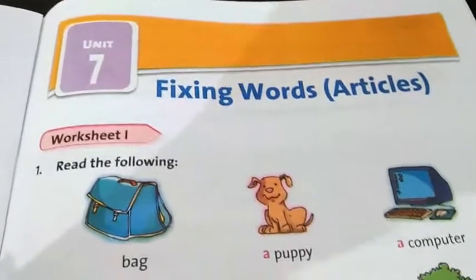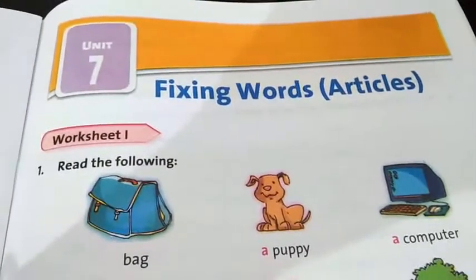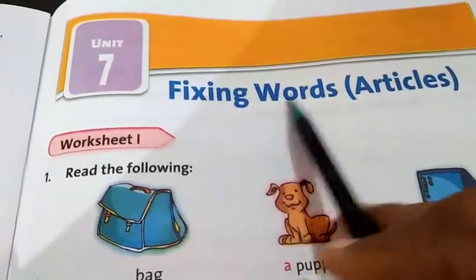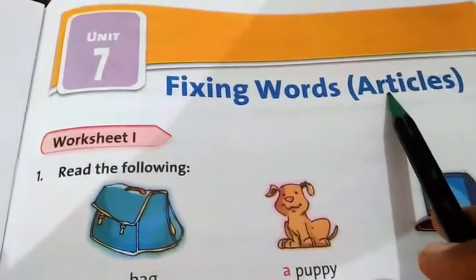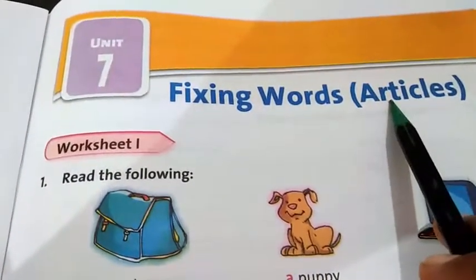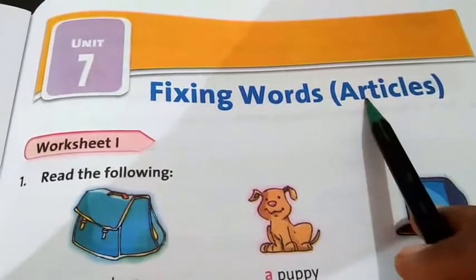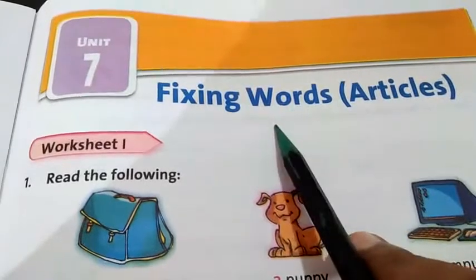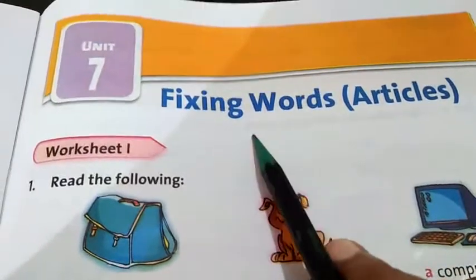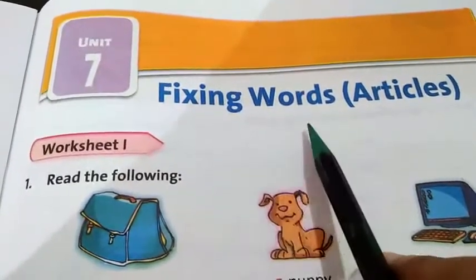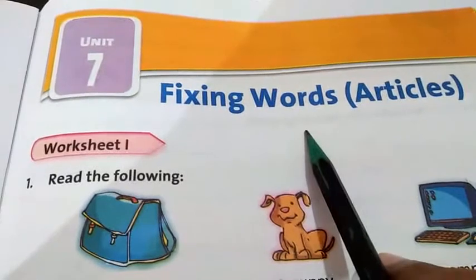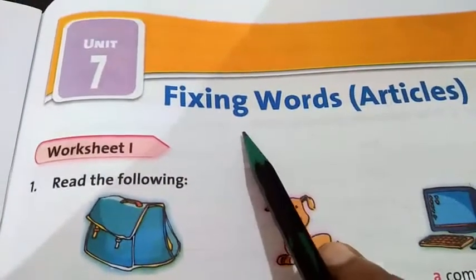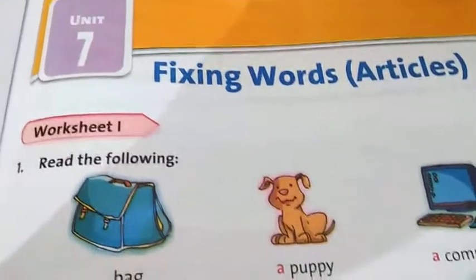Good morning children. Welcome to the class. Today we will read fixing words, i.e. articles. As you know, children, articles are two types: indefinite and definite. First of all, we will read indefinite articles.